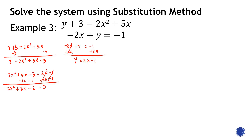This gives us 2x-squared plus 3x minus 2 equals 0. Since the leading coefficient is 2 and not 1, factoring by trial and error would waste time, so let's use the quadratic formula directly. The quadratic formula is x equals negative b plus or minus the square root of b-squared minus 4ac, all divided by 2a.